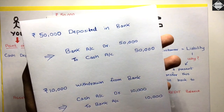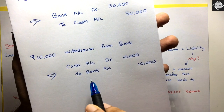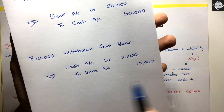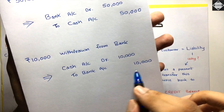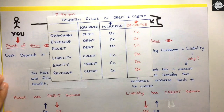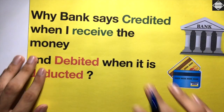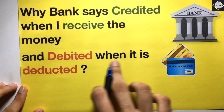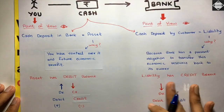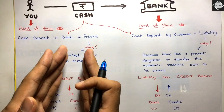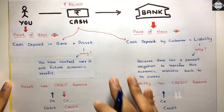From your point of view it's an asset, so when it increases you debit the bank account, and when it decreases you credit it. For example, if you withdraw 10,000 from the bank, the bank account is credited and the cash account is debited because cash in hand increased but bank balance decreased. That's the simple logic — it's just about the point of view: from your side it's an asset, from the bank's side the same money is a liability.